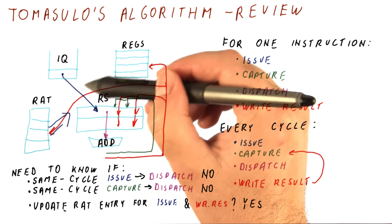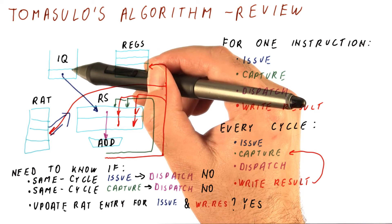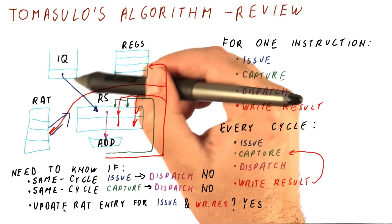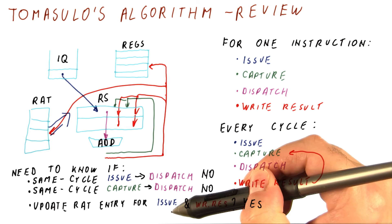And because the instructions who will read the RAT are the ones that issue even later, they need to see the latest value of the register, which means they need to see the value that the issuing instruction is producing.